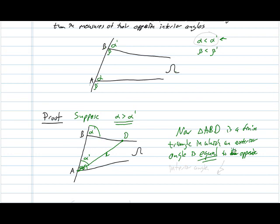It's equal to its opposite interior angle. But we do know that for regular triangles, the exterior angle is always strictly greater than the opposite interior angle. So this is a contradiction. So, well, alpha can't be bigger than alpha prime.